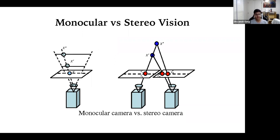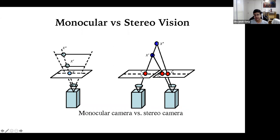There are two ways to do depth estimation. One is monocular vision, using just one camera. The second is stereo vision, which uses two cameras. The problem with monocular cameras is that estimating depth is not a well-posed problem — for any pixel, the object could be anywhere along a ray. But with a stereo camera system, you can find out exactly where an object is by triangulating the pixel location in both the left and right images.